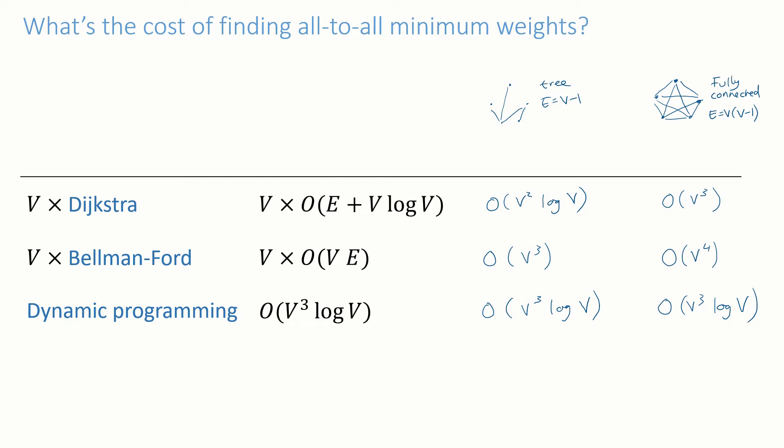Actually, scrub that. Here's a way to get an even clearer comparison between the three algorithms. Let's consider a graph where E grows like V to the alpha, or more precisely E equals big theta of V to the alpha for some alpha. If we set alpha equals 1 we get the tree case. If we set alpha equals 2 we get the fully connected case. So this general case for alpha between 1 and 2 encompasses the full range of graphs that we're interested in.